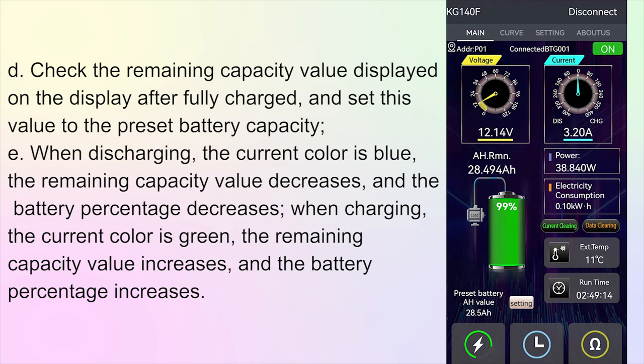Step E: When discharging, the current color is blue, the remaining capacity value decreases, and the battery percentage decreases.